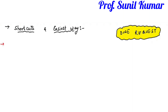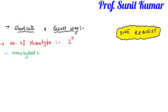The first question always asked in genetics is about the number of phenotypes. I give you a simple formula: 2 raised to n, where n is the number of crosses. For a monohybrid cross, it is 2 raised to 1, giving a 3:1 ratio — that is your monohybrid cross phenotypic ratio.